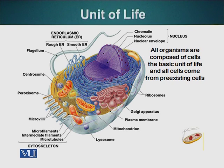The cytoskeleton is composed of three different types: microfilaments or actin filaments, microtubules, and intermediate filaments. We will talk about these three components in more detail later on.